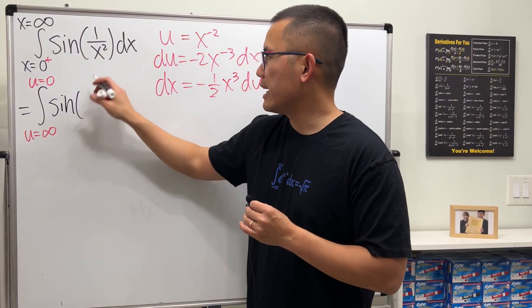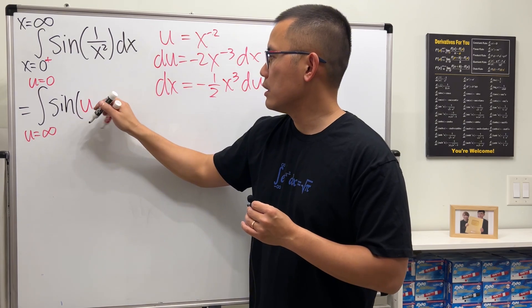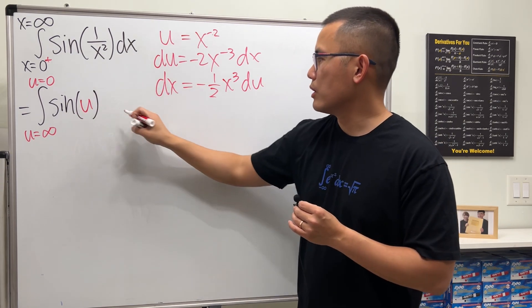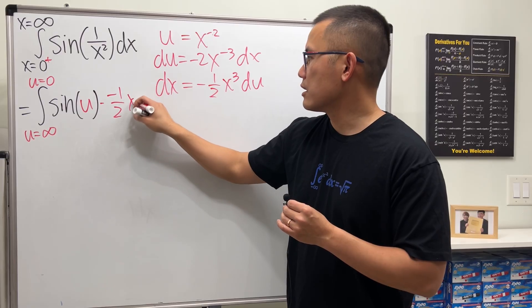Okay, and then continue. Sine, this is the u. And then dx is all that. So multiply by negative 1 half, x to the third power, and then du.